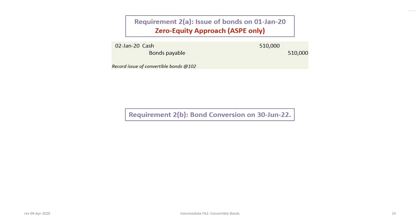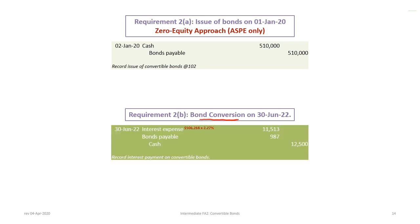For requirement two, we record the bond conversion on June 30th, 2022. Before the actual conversion, we update the interest. From the amortization table, at the end of the fourth payment the bond account balance is $506,268. We multiply by 2.27% to get interest of $1,153 for the fifth payment. Cash is credited for $12,500, and the bond payable is debited for $987 — because we have a premium being amortized downward.